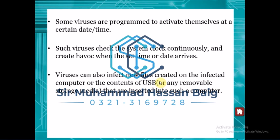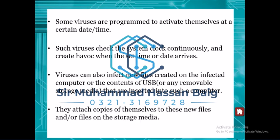A virus can also spread through removable devices like USB drives or memory cards connected to your computer. For example, if a virus comes in via a USB drive, and you share it with a friend or they click on it, the virus can transfer through that USB. The virus attaches copies of itself to new files, consuming storage and causing your system to slow down.